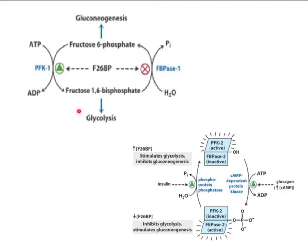When fructose 2,6-bisphosphate levels are low, the opposite occurs — FBPase1 is going to be activated more than PFK1 and gluconeogenesis is going to occur. The concentration of fructose 2,6-bisphosphate is controlled by a large bifunctional enzyme that has both PFK2 activity and FBPase2 activity. Insulin and glucagon control the activity of these two enzymes within this large enzyme.